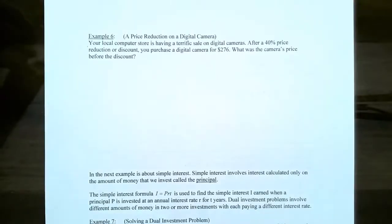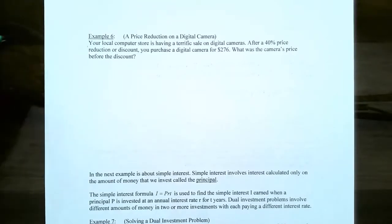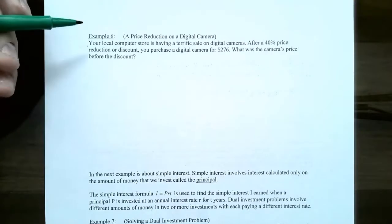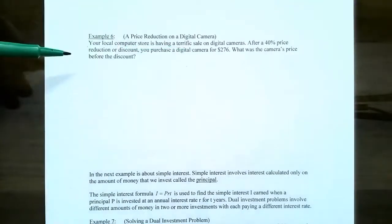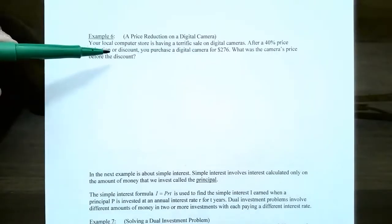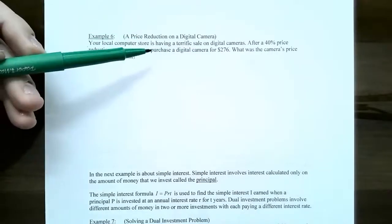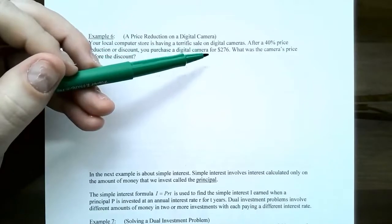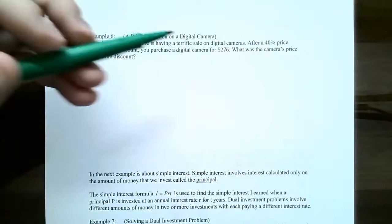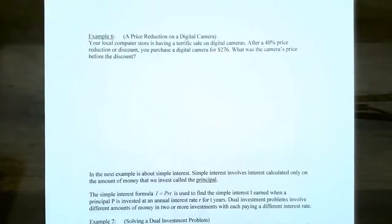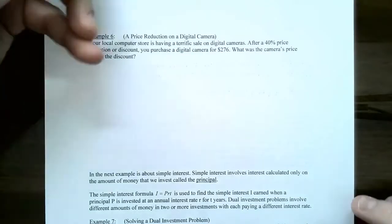The next three examples deal with money. In example six, we have a price reduction or discount on a digital camera. The local computer store is having a sale with a 40% reduction, and you purchase a digital camera for $276 — that's how much you paid after the discount. What was the camera's price before the discount, or in other words, what was the retail price? The first step is to represent the variable.